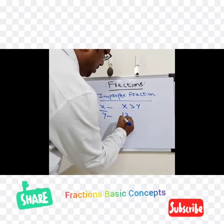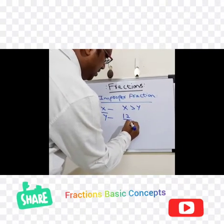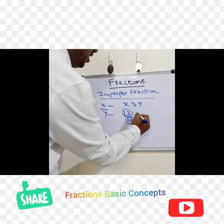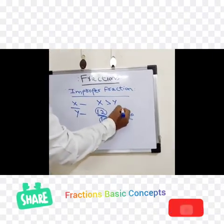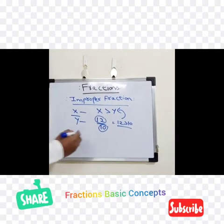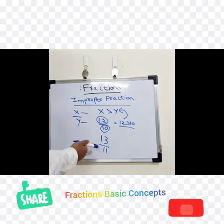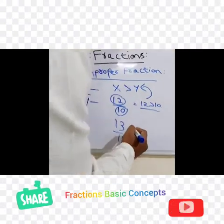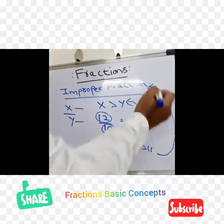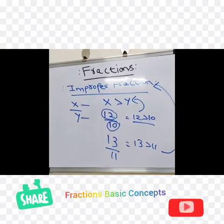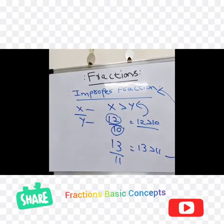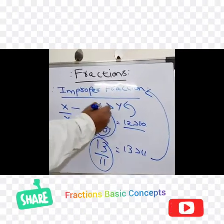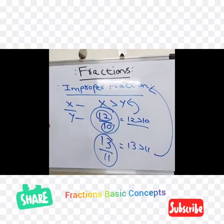For example, 12 by 10 is an improper fraction because the numerator is 12 and the denominator is 10, and 12 is greater than 10. Another example: 13 by 11 — here the numerator 13 is greater than the denominator 11, so this is also an improper fraction. The value of an improper fraction is always greater than or equal to 1.